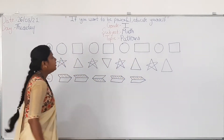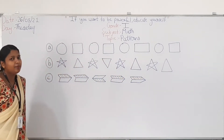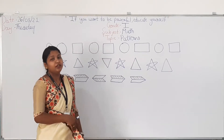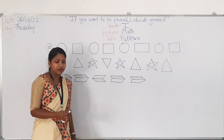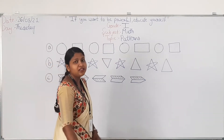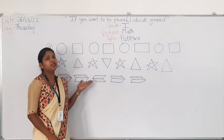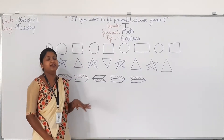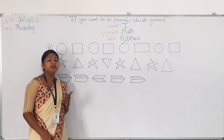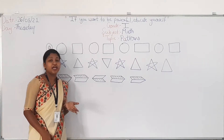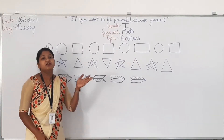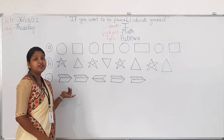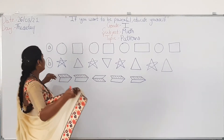See here, I have drawn some patterns on the board. In this pattern there are odd ones out. Do you know what is odd one out? Odd one out means it does not belong to the particular group — that object is an odd one out.